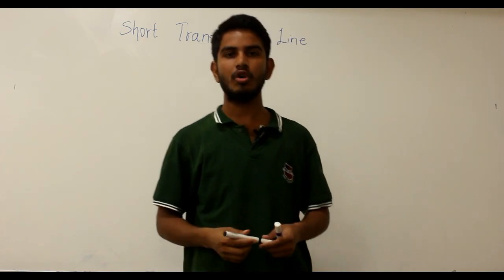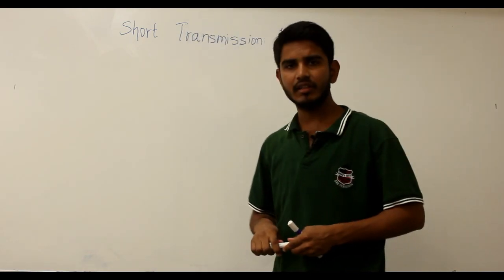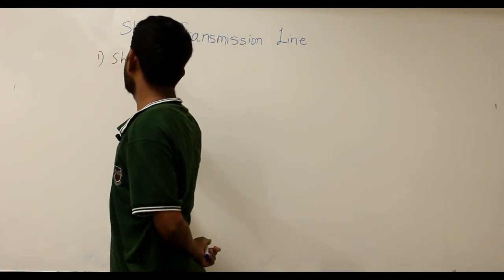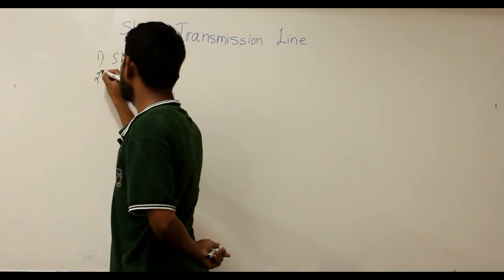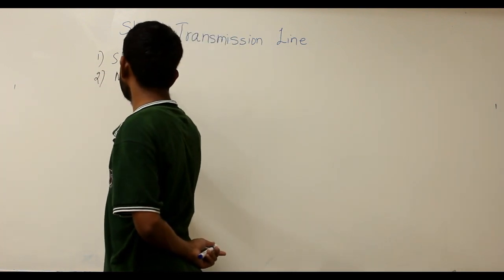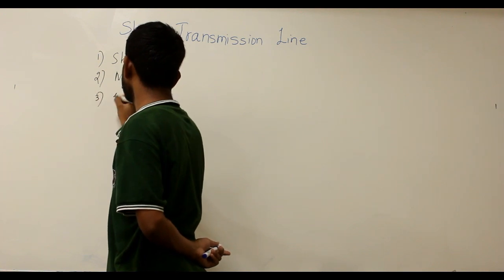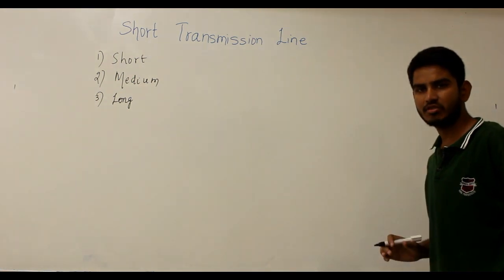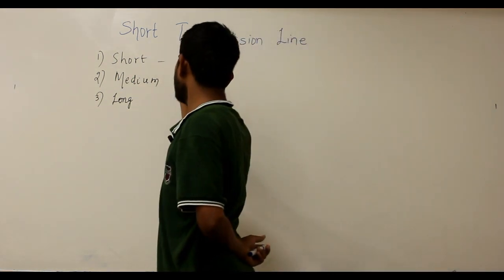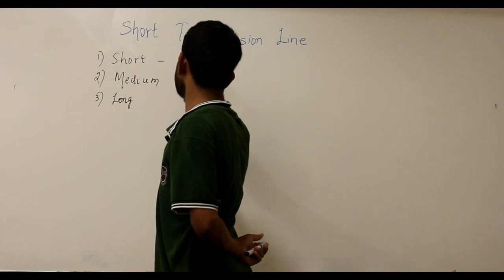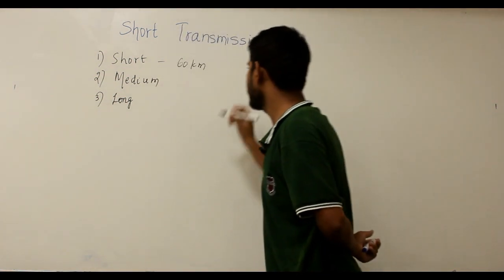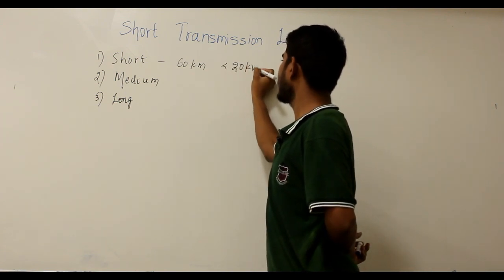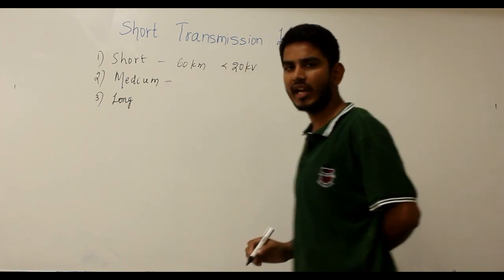In this video, let us discuss about short transmission lines. Transmission lines are categorized into three types: the first type is the short distance transmission line, the second is the medium distance transmission line, and the third is the long distance transmission line. Short distance transmission lines have a line length up to 60 kilometers and a line voltage below 20 kV.